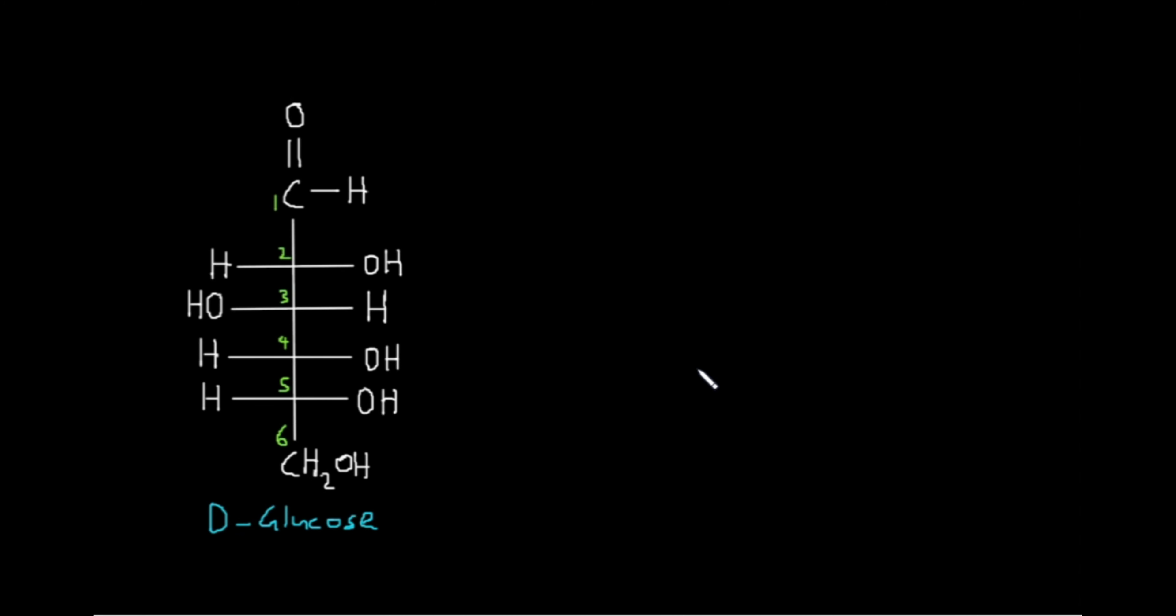In this video we'll discuss how the straight chain form of D-glucose can be converted to the cyclic structure, which is commonly shown while drawing condensation reactions between two or more monosaccharides. Here I have drawn the straight chain structure of D-glucose. I have numbered the carbon atoms in green from one to six.